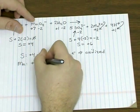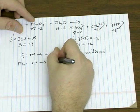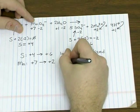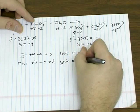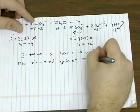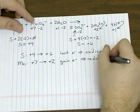And manganese, like we saw before, is going from plus seven to plus two. So that's a gain of electrons, which means manganese is being reduced.